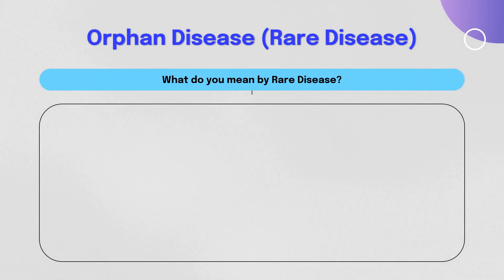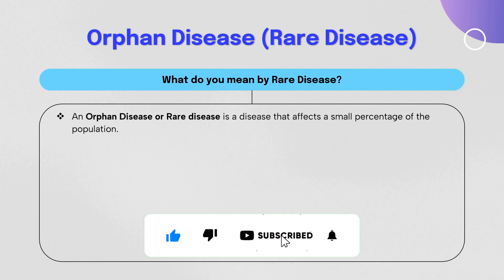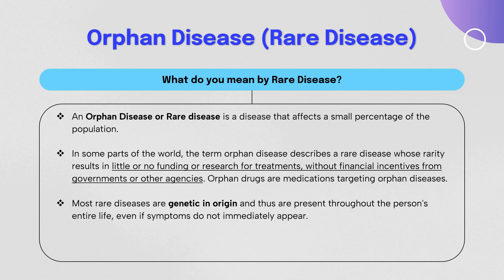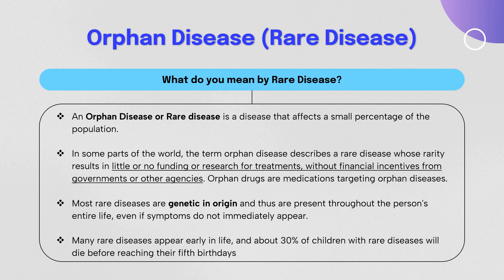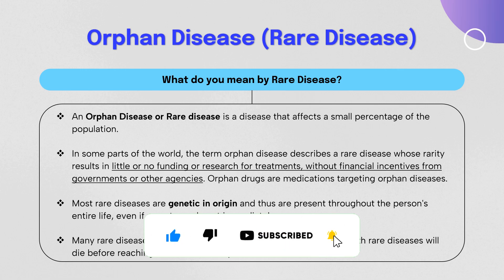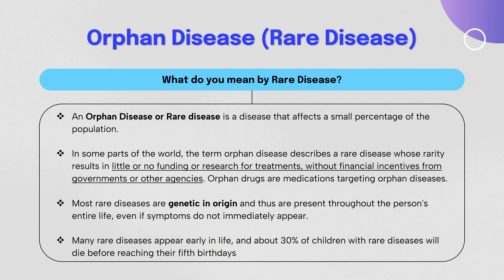An orphan disease is a disease that affects a very small number of people, and its rarity results in little to no funding for research, treatment, or financial incentives from government or agencies. Importantly, almost 90 percent of rare diseases have a genetic origin, affecting people throughout their lifetime, often with symptoms that do not appear immediately. Almost 30 percent of children born with rare diseases die before their fifth birthday, which illustrates the seriousness of these conditions.